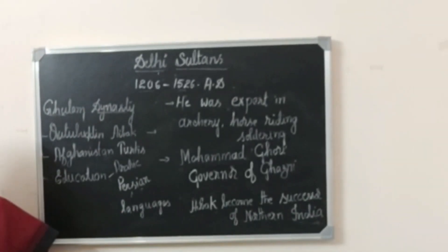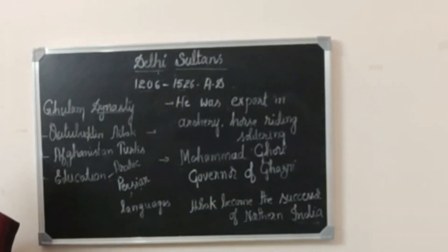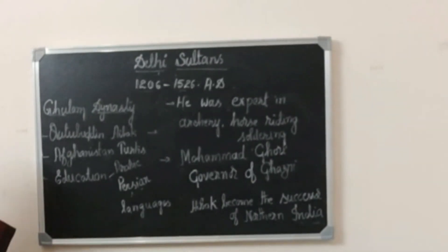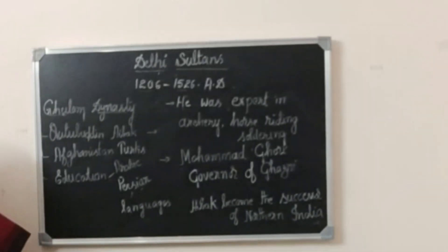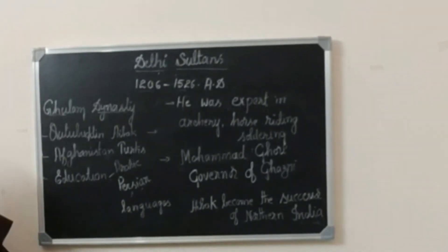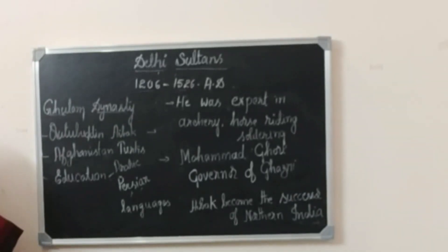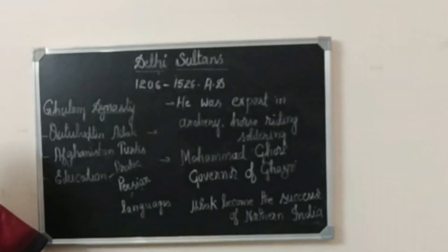Hello children, today I am here to teach about Delhi Sultans. The period between 1260 to 1526 AD is called the period of Sultanates. Five dynasties ruled over northern India. They are the Slave Dynasty or Kulam Dynasty, next Khilji Dynasty, Tughlaq Dynasty, Sayyid Dynasty, and Lodhi Dynasty.